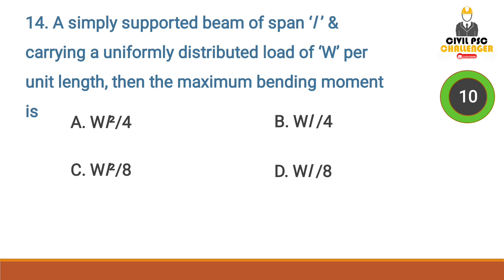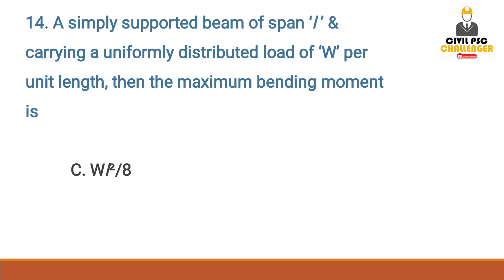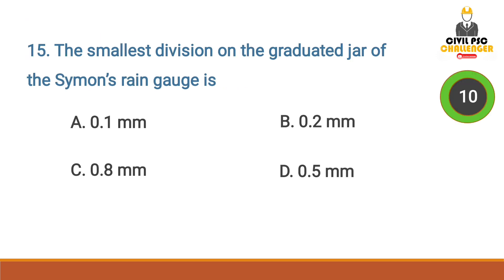Next question: a simply supported beam of span L carrying a uniformly distributed load of w per unit length — the maximum bending moment is — answer option C: wL² by 8. Next question: the smallest division on the graduated jar of Simon's rain gauge is...